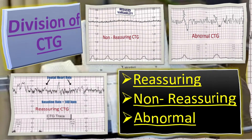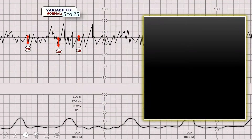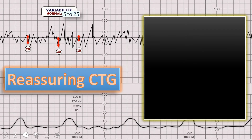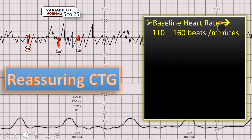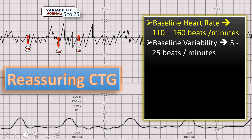Reassuring CTG is the one in which the baseline fetal heart rate lies in the range of 110 to 160 beats per minute. Here you can see in this CTG that the heart rate is within 110 to 160 beats per minute — that is a reassuring sign. The second point is baseline variability of 5 to 25 beats per minute, which you can see here is normal.